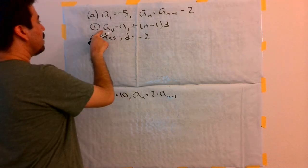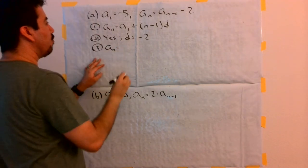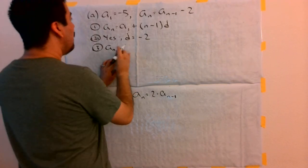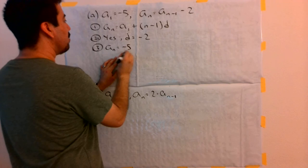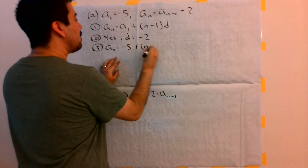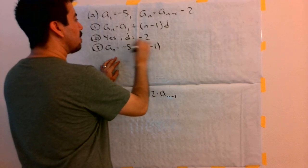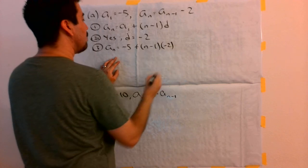So, I'm referring to this one now. I am trying to convert it and fill in all the information. a1 was given to us as negative 5. That's what a1 is being replaced with. And then, in parentheses, plus n minus 1 times the common difference, in this case, was negative 2.